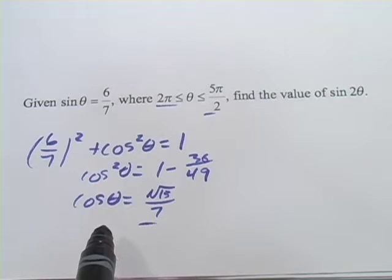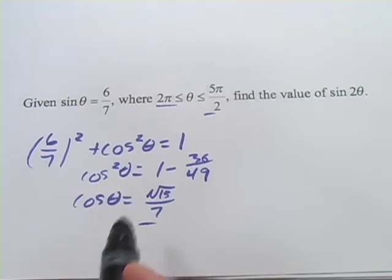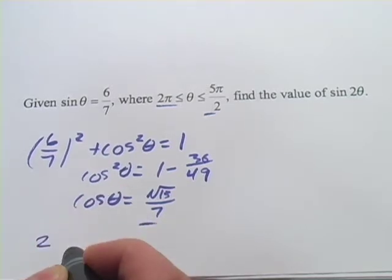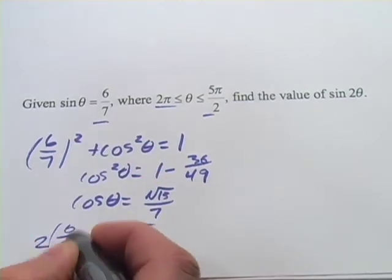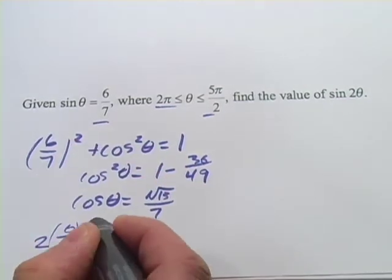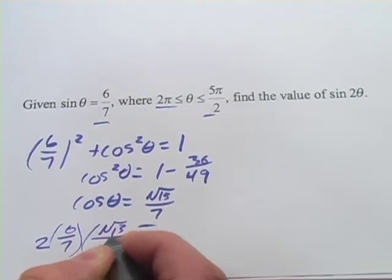Now we want to plug that into the formula and the double angle formula for sine is 2 times the sine of theta times cosine theta. So 2 times the sine of theta which we're given as 6/7 times the cosine of theta which is square root of 13 over 7.